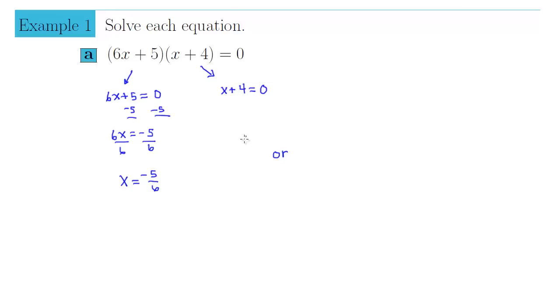x plus 4 equals zero. Well, this occurs when we subtract both sides by 4. In other words, this occurs when x is negative 4.